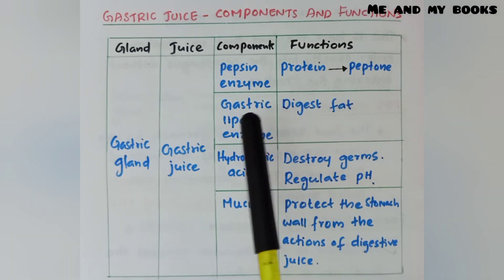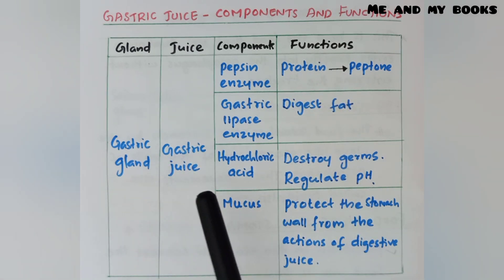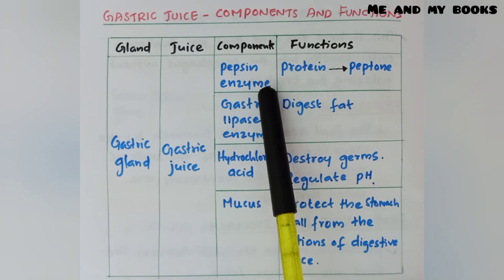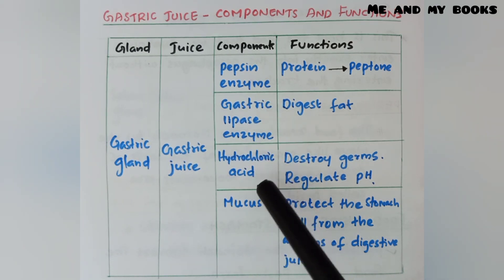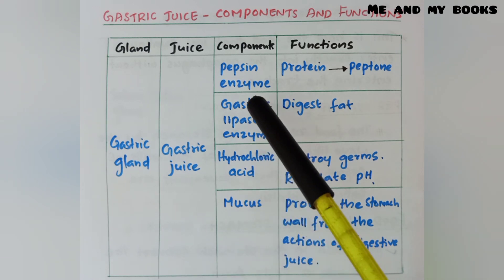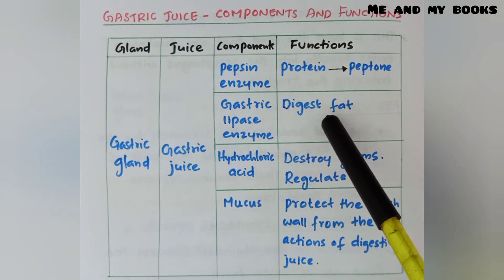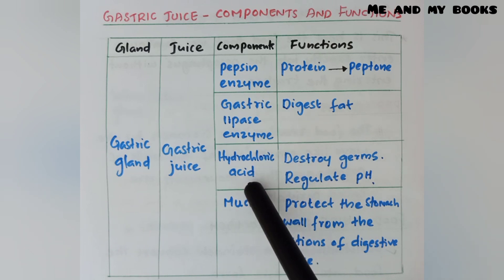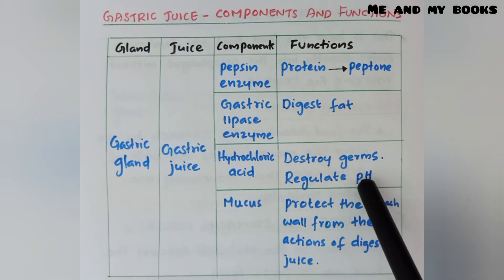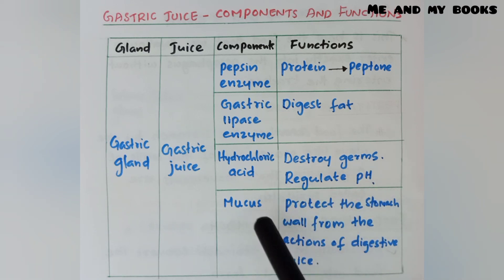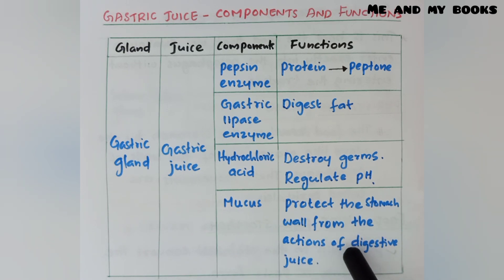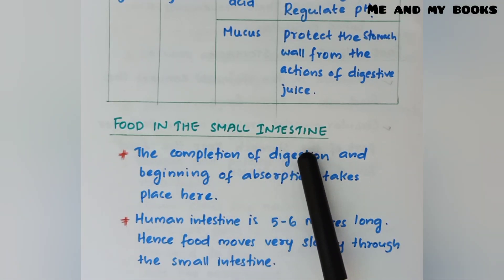Gastric juice components and functions — table: gland is gastric gland, juice is gastric juice. Components: pepsin enzyme, gastric lipase enzyme, hydrochloric acid, and mucus. Pepsin converts protein into peptone. Gastric lipase digests fat. Hydrochloric acid destroys germs and helps regulate pH. Mucus protects the stomach wall from the action of digestive juices including hydrochloric acid.